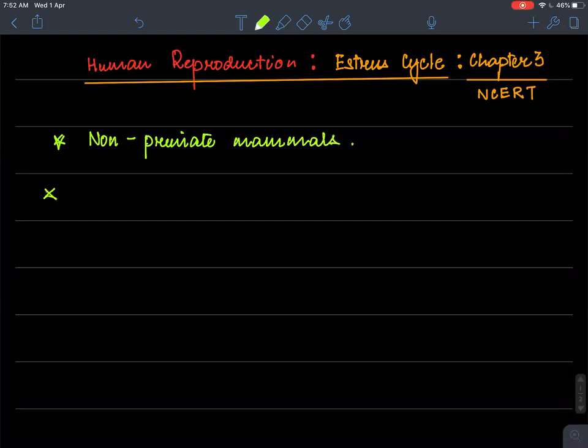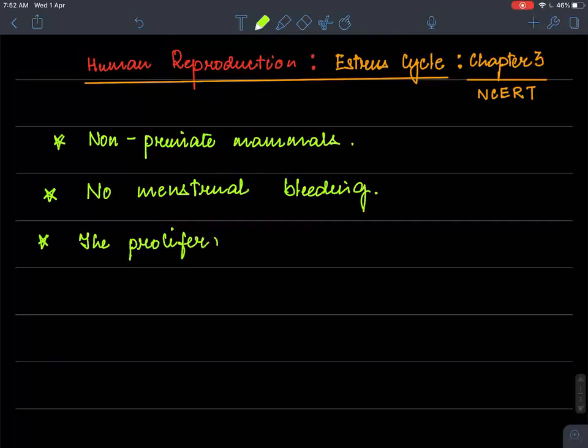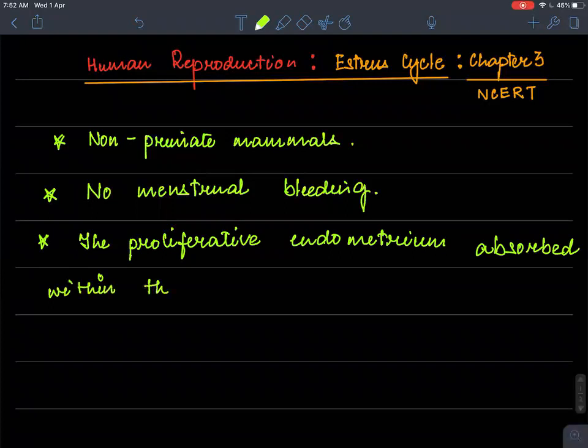And in this cycle, there is no menstrual bleeding. The proliferative endometrium absorbed within the uterus and is not secreted outside the body like that of menstrual cycle.